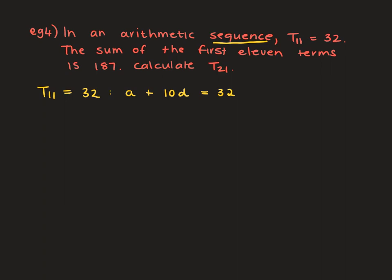If they tell you it's arithmetic, we're talking about the constant difference and we use the A plus 10D idea. Then the problem also states that the sum of the first 11 terms is 187. Now they're talking about summing, so it's a series. S11 equals 187.